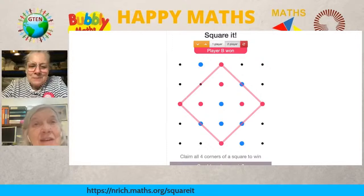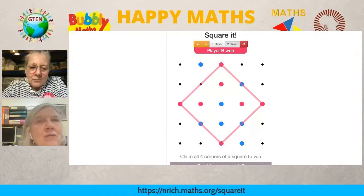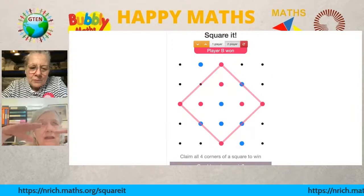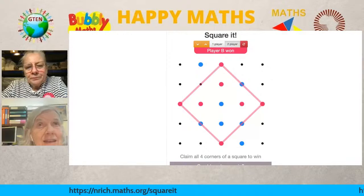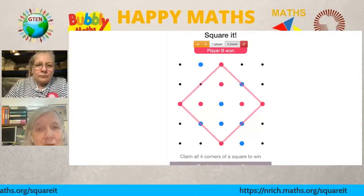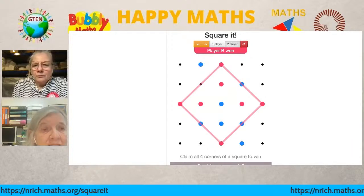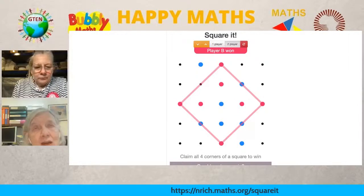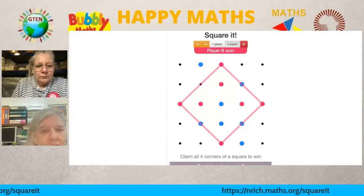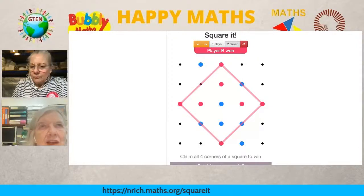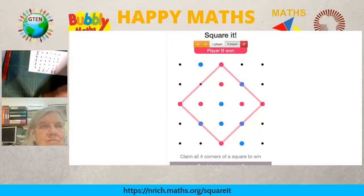Even though it's tilted, we call it a tilted square. This is a surprise to many people — they say 'that's not a square,' imagining a square must have edges horizontal and vertical. But of course it doesn't — you can have a tilted square. You can also make this game on paper with dots, using a cross for one player and a circle for the other, and play it with pencil and paper.